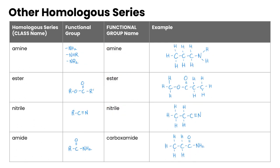We have five more to go through. Amines — there are three different types: we could have just an NH2, we could have an NH (a nitrogen attached to a hydrogen and an alkyl group), or we can have NR2 (a nitrogen attached to two alkyl groups). Its functional group name is amine. You can see the amine in this example, and the variations come from substituting out hydrogens with additional alkyl groups.